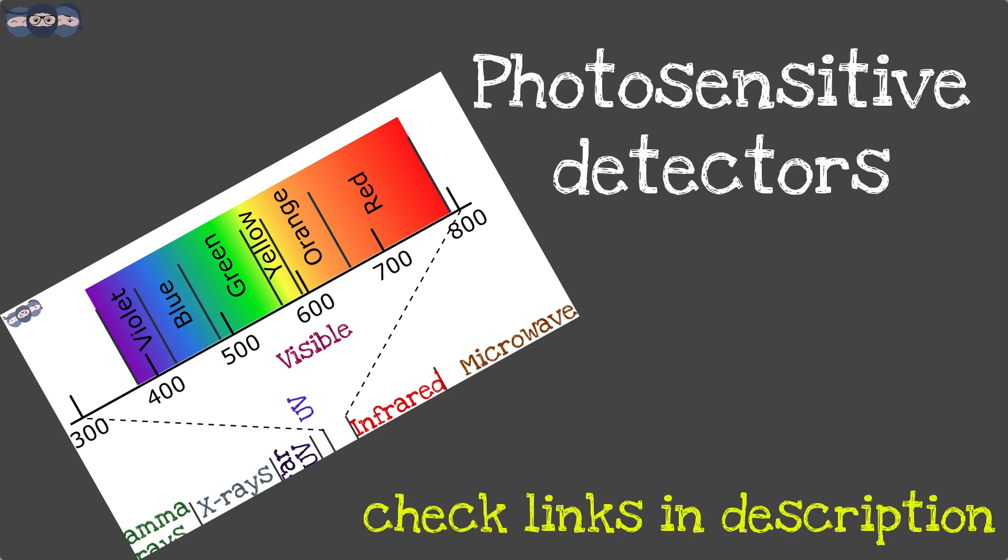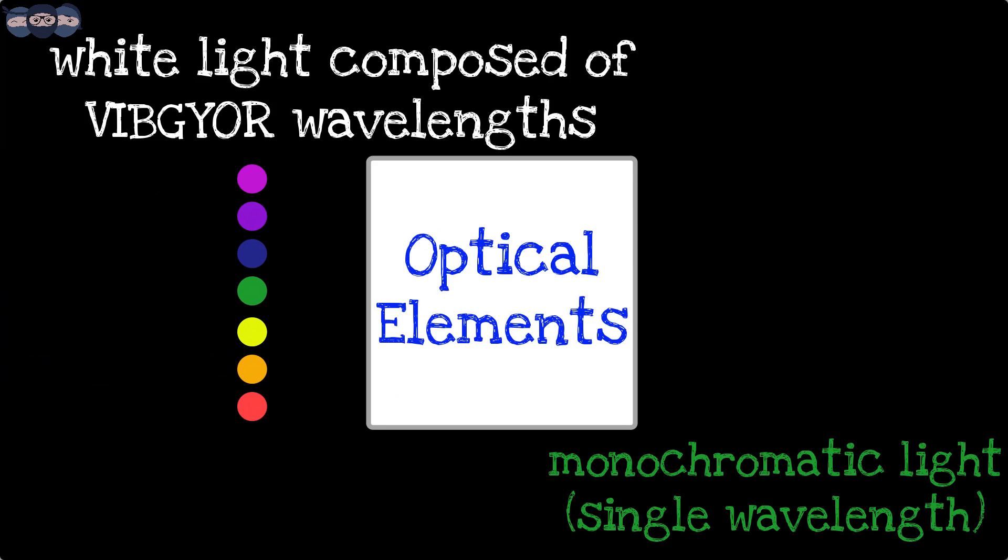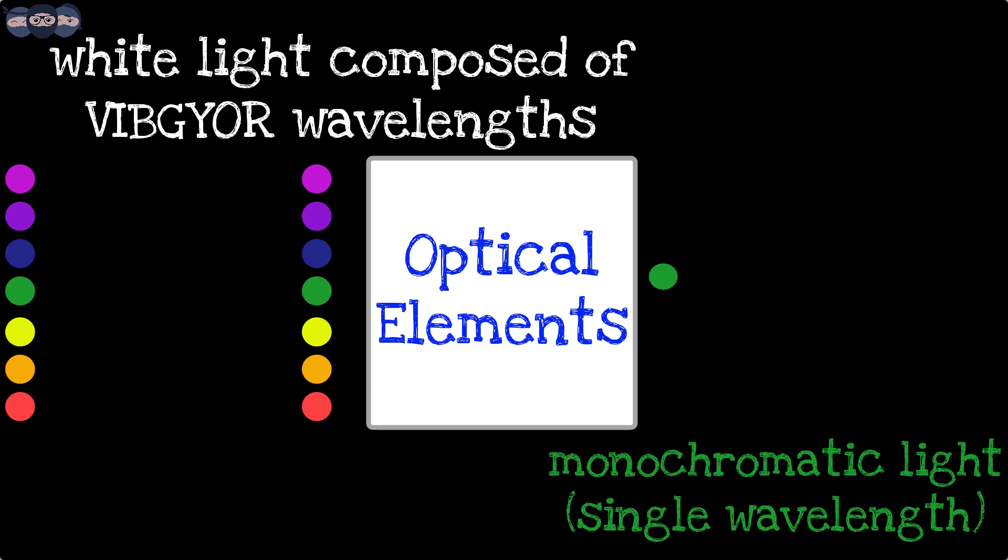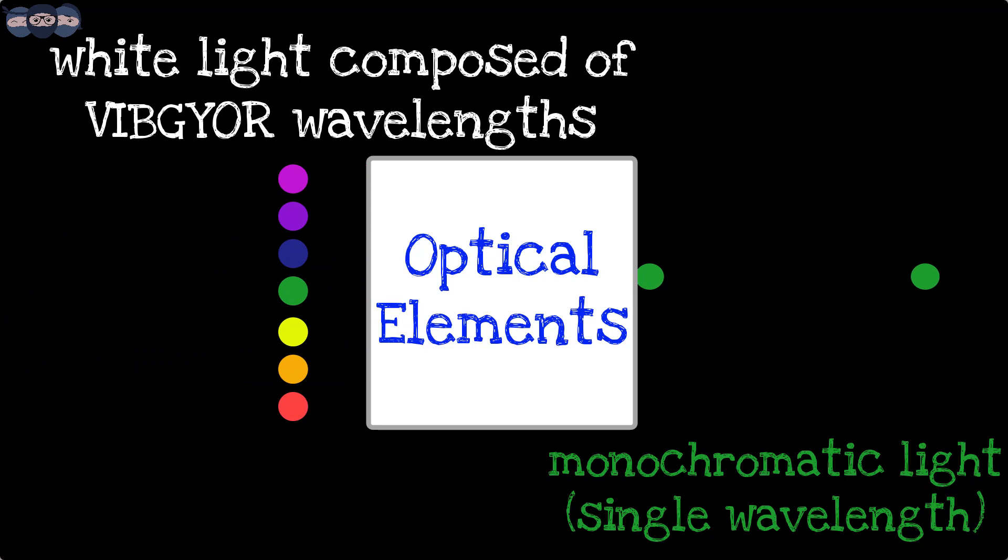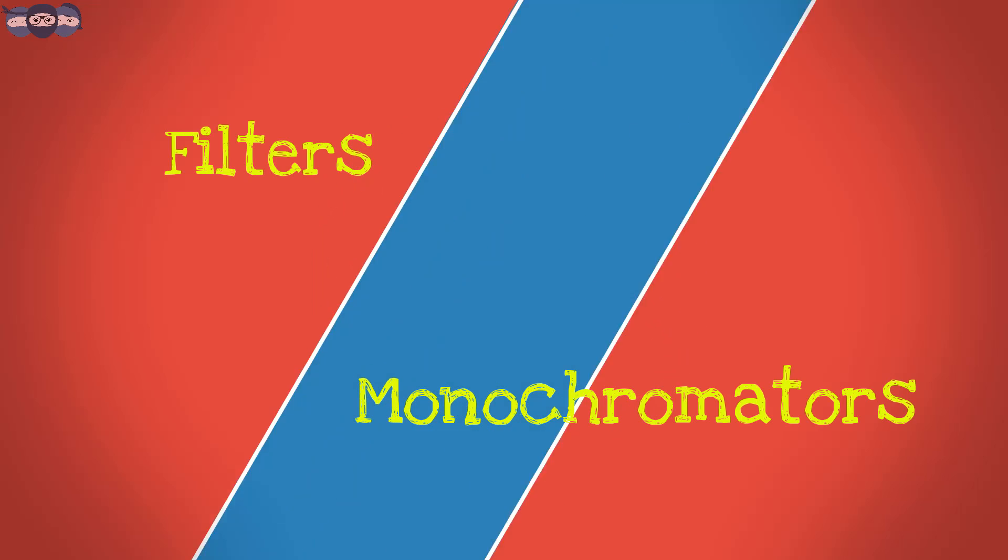The previous video discussed the different photosensitive detectors used in analytical instruments. This video covers the optical elements used to isolate the wavelengths of radiation and obtain monochromatic light. These optical elements are called filters or monochromators.